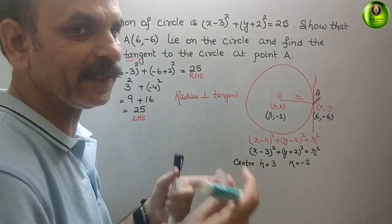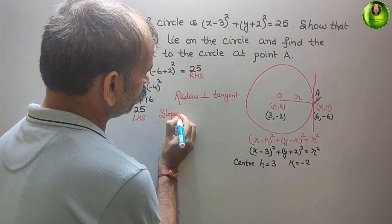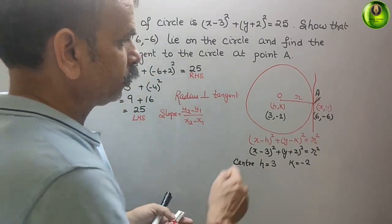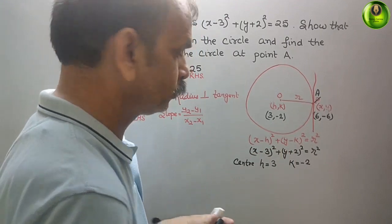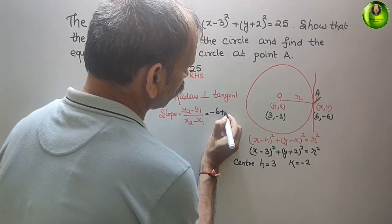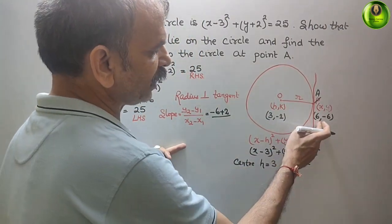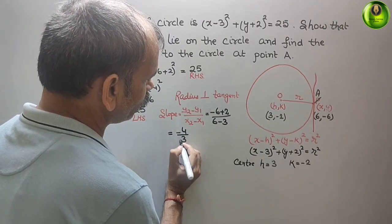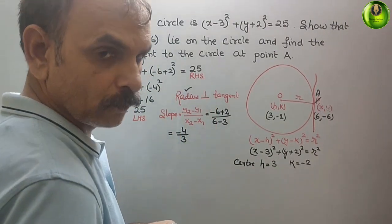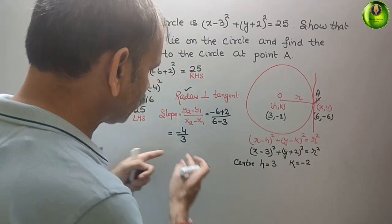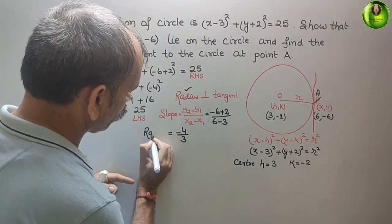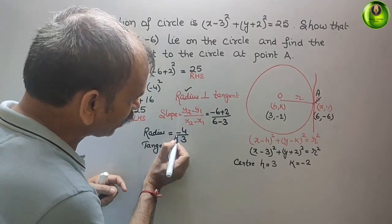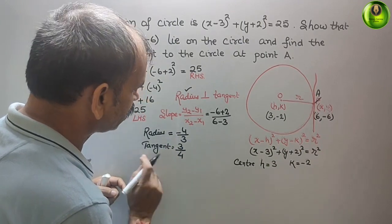We will find the slope of the radius first. The slope formula is (y₂ - y₁)/(x₂ - x₁). Using center (3, -2) and point A(6, -6): slope = (-6+2)/(6-3) = -4/3. So the slope of the radius is -4/3. The slope of the tangent is the negative reciprocal: 3/4.